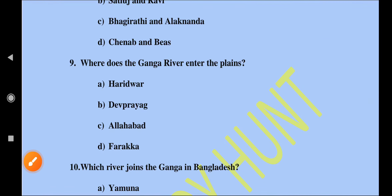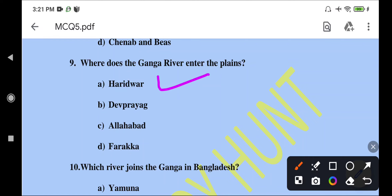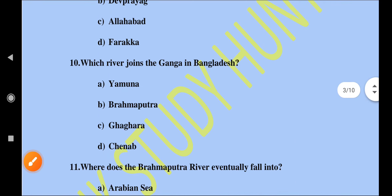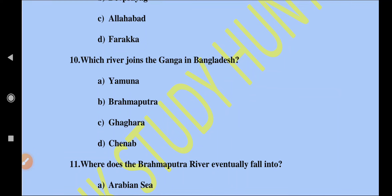Where does the Ganga River enter the plains? The Ganga first originates from the Himalayas at the Gangotri Glacier in Uttarakhand, flows through the mountains, and then enters the plains at Haridwar, which is a city in Uttarakhand. So we can go with Haridwar.